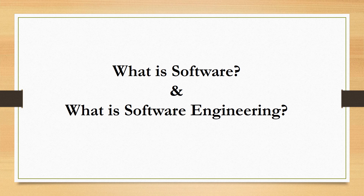The other type is application software. Application software is used to complete specific tasks defined by the user — for example, Microsoft Word, Excel, PowerPoint, etc. The concept of software should now be very clear.